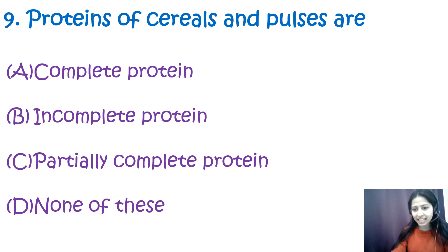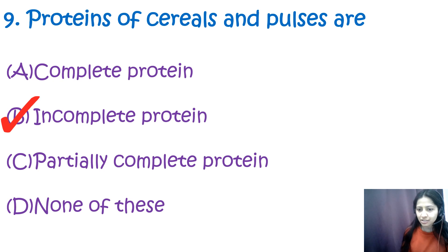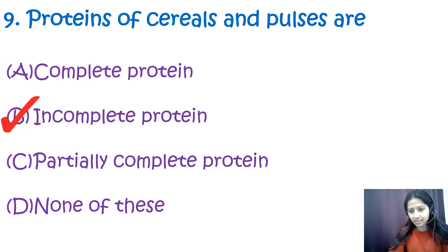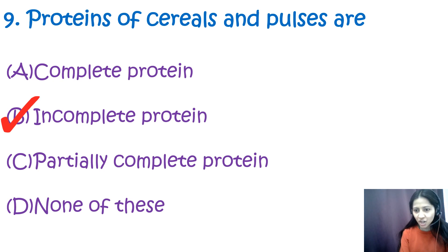Question 9: Proteins of cereals and pulses are — complete protein, incomplete protein, partial complete protein, or none of these? The correct option is B — incomplete protein. Cereals and pulses individually do not contain all essential amino acids the body needs. However, when combined, they provide a complete protein, which is why they are often consumed together.